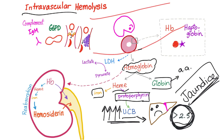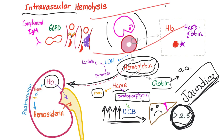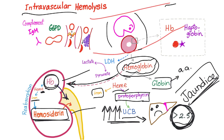But in intravascular hemolysis, the process occurs in the blood vessel. Some of this hemoglobin, unfortunately, will travel as free hemoglobin to the kidney via the renal artery. Some of it will be secreted in the urine, giving us hemoglobinuria — hemoglobin in the urine. The kidney will try to reabsorb some of the hemoglobin; hemoglobin has heme which has iron, and the kidney tubules can store it in the form of hemosiderin. Eventually, these tubule cells get sloughed off and excreted in the urine, giving us hemosiderinuria.